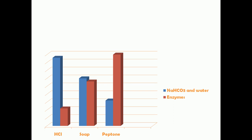In the third case, when peptones — partially digested proteins — are given, there is increased production of digestive enzymes compared to sodium bicarbonate and water. This is because peptones are not acidic and don't need to be neutralized by base, so sodium bicarbonate secretion is lower. Since the main need is to digest proteins, the concentration of digestive enzymes is higher in the secretion.